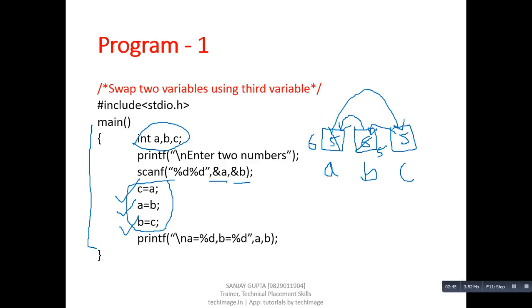Through this printf statement we can display the current values of A and B to the user. This completes the process of swapping two variables using a third variable. Now you might be thinking: can we do the same process without using a third variable? Absolutely yes, we can.